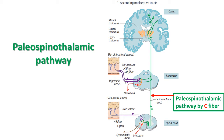From Rexed lamina 1 and 2, the second order neuron starts. Sometimes there may be some interneuron between the first and second order neurons. The second order neuron then crosses to the opposite side in front of the central canal and ascends in the lateral funiculus as the lateral spinothalamic tract.